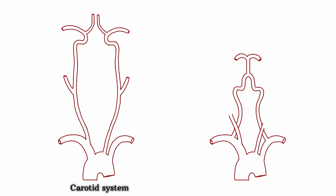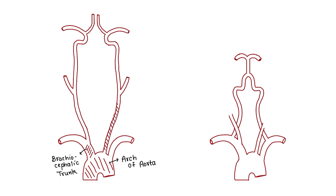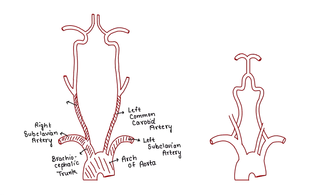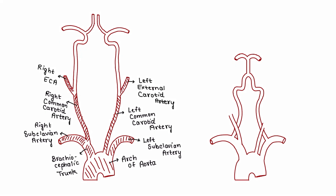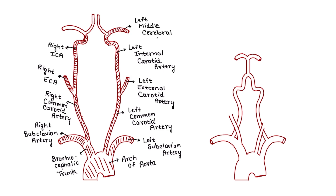First, the internal carotid artery. The arch of the aorta gives rise to three branches: the brachiocephalic trunk, the left common carotid artery, and the left subclavian artery. The brachiocephalic trunk terminates into the right subclavian artery and right common carotid artery. The common carotid artery on both sides gives rise to the external carotid artery and internal carotid artery. The external carotid artery mainly supplies facial structures and neck, while the internal carotid artery enters the cranial cavity and terminates into the middle cerebral artery and anterior cerebral artery on both sides.